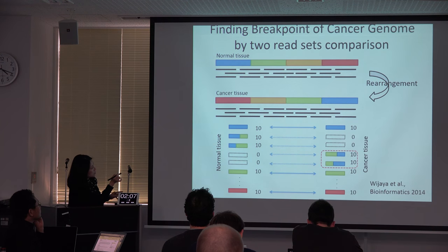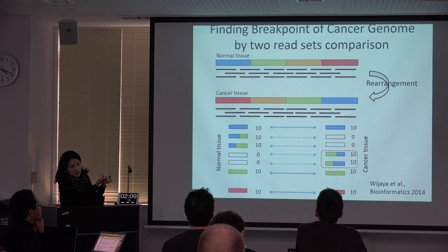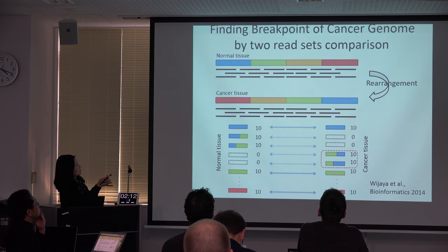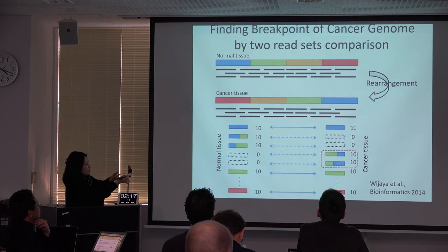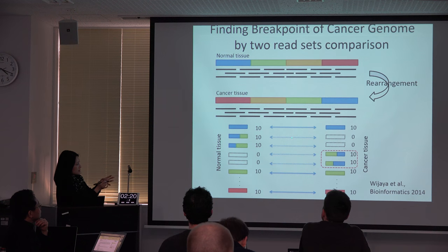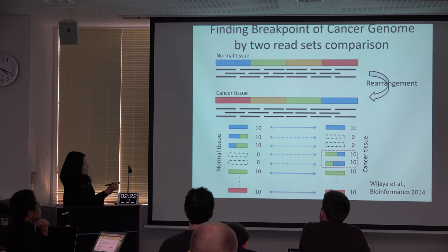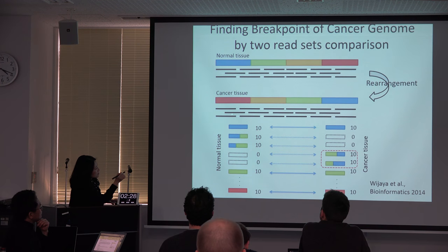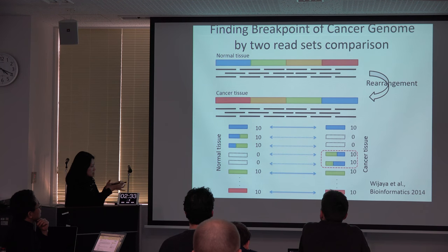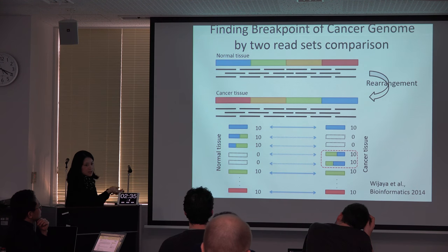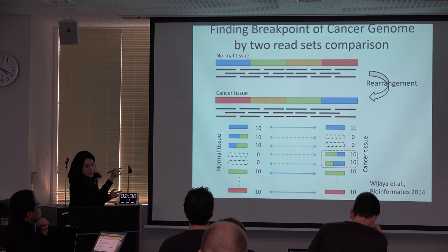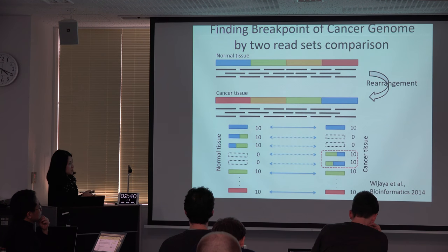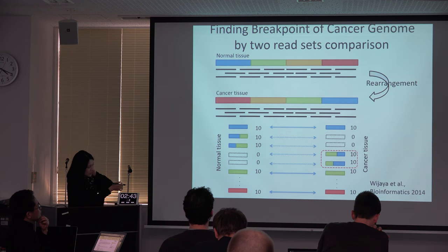Look at this pattern. This pattern only appears in cancer genomes. So if you compare the patterns between the two sets, you can see the unbalanced reads. These patterns appear in both datasets, and this pattern only appears in cancer genomes. So if you compare the number of similar patterns in each set, you can find those reads without using the reference. This idea was published in BioMedicine in 2014.